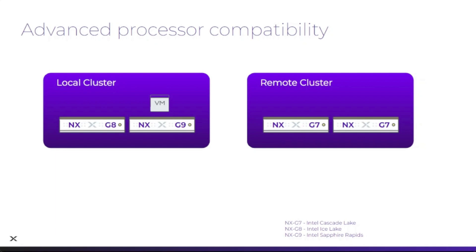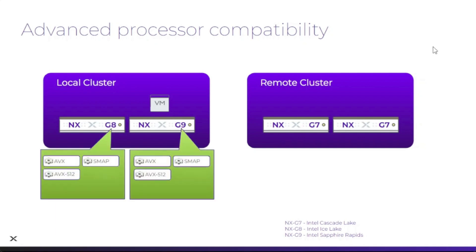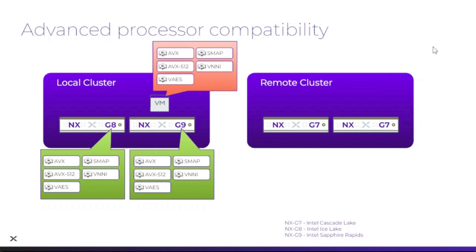Before advanced processor compatibility, the AHV cluster already supported automatic leveling of the features available in each node by identifying the common set of CPU features available to all nodes and using that set of features to expose to new VMs. This ensures that VMs created on any host in the cluster can live migrate to and from any node in the cluster.